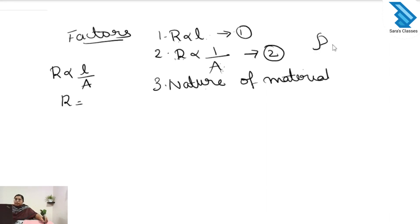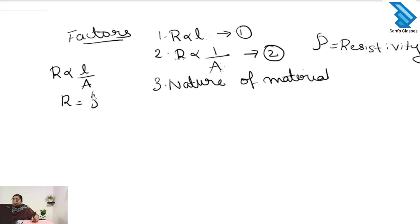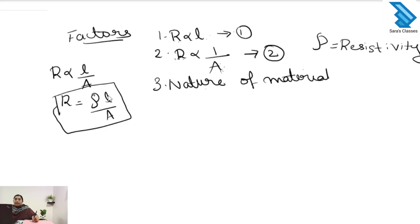That constant is known as rho, or resistivity. So R is equal to rho L by A. Here R is resistance, rho is the resistivity, L is the length of the conductor, and A is the area of cross section.